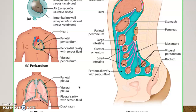In the thoracic cavity we give the serous membranes their own individual names. For example, the covering around the heart is called the pericardium — 'peri' means around, 'cardio' means heart. As you can see in the top left picture, a fist going into a balloon illustrates how it's open on one end and forms two layers; during development, the heart pushes into this serous balloon structure and the membranes wrap around the organ.